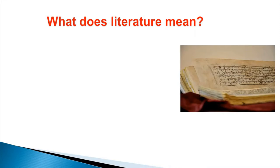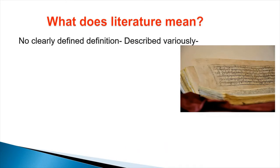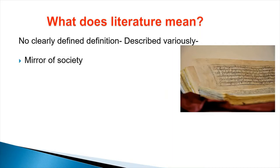Dear students, in every age, the critics and writers have tried to define literature in varied terms. Literature has been called the mirror of society or a reflection of society. That is, different historical periods are reflected in literature. We get information about economics, psychology, science, religion, politics, cultures and social depth in literary writings through the actions and speeches of characters or the author's style of writing or his intent. For example, you can look at the epics Ramayana and Mahabharata.